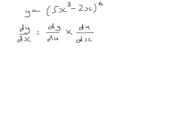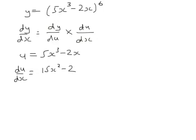So what is u? Well, u is normally the bit that's inside the brackets. So there's u. So let's work out what du by dx is. Du by dx. Differentiate, that's 15x squared minus 2.